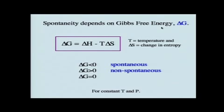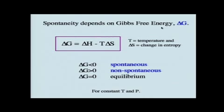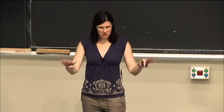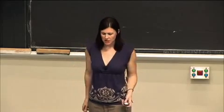That means that if delta G is greater than zero, then what we're going to see is a non-spontaneous process. And finally, in the case where delta G is equal to zero, at this point we're at equilibrium, which basically means that there's no net change in either the forward or the reverse reaction. In terms of thinking about whether something's spontaneous or not spontaneous, at equilibrium we see no net change.